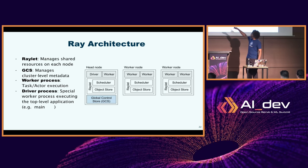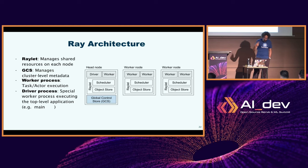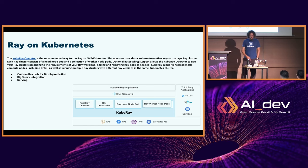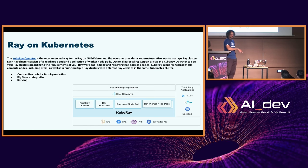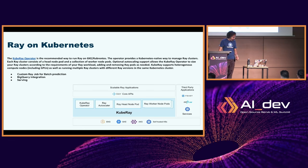On Kubernetes specifically, there is the KubeRay operator, which allows you to run Ray on top of Kubernetes. It follows the same exact architecture - you have a head node and one or multiple worker nodes running inside Kubernetes, except they run as pods instead of running as nodes. Inside those pods, you have all the containers for those components: the Raylet, the GCS, and all that stuff. The API is then exposed to you via a Kubernetes service.